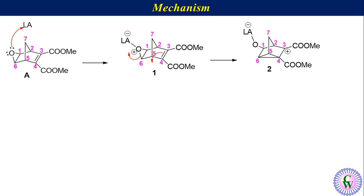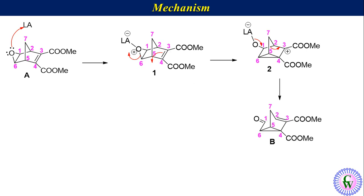Now, breaking of the C1–C2 sigma bond, formation of the C2–C3 pi bond, release of the Lewis acid, and formation of a pi bond between oxygen and C1 leads to compound B.